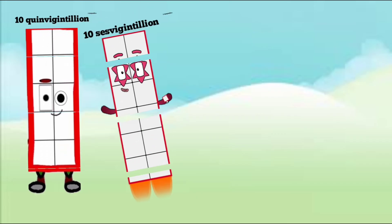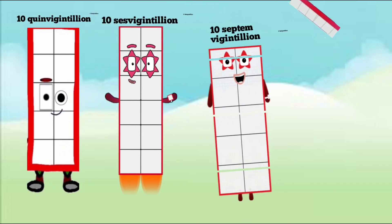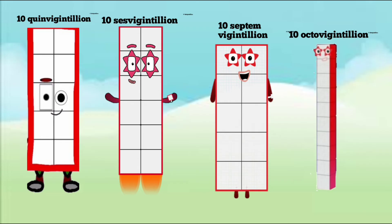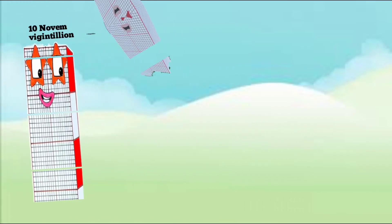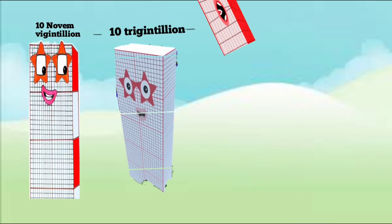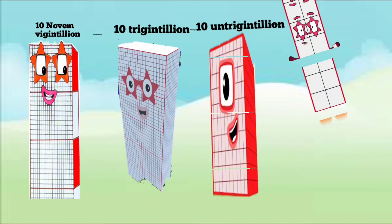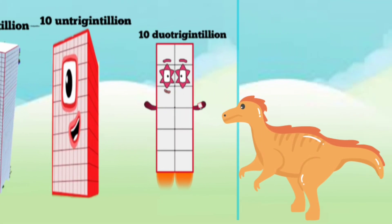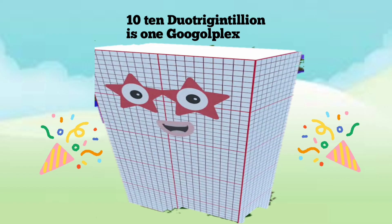10 Quinvigintillion. 10 Sesvigintillion. 10 Septemvigintillion. 10 Octovigintillion. 10 Novemvigintillion. 10 Trigintillion. 10 Untrigintillion. 10 Duotrigintillion. 10 Duotrigintillion is 1 Googolplex.